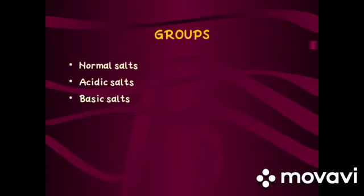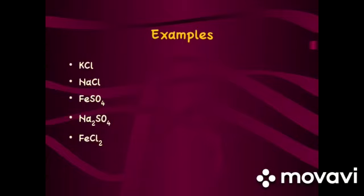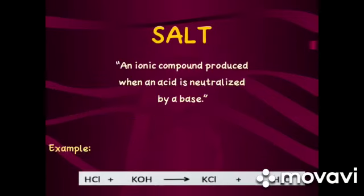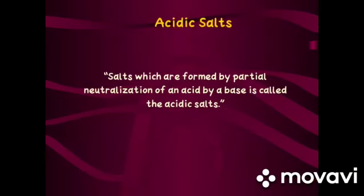On the basis of their chemical nature, salts can be divided into three groups: normal salts, acidic salts, and basic salts. Normal salts are salts formed by the complete neutralization of an acid by a base. We can also say a normal salt is formed by the complete replacement of all replaceable hydrogen atoms from an acid — meaning the salt produced contains no replaceable hydrogen atom or hydroxyl group. Examples include potassium chloride, sodium chloride, iron sulfate, sodium sulfate, and iron chloride. In the reaction HCl + KOH → KCl + H₂O, there is no H or OH group in the salt KCl.